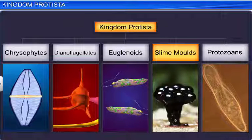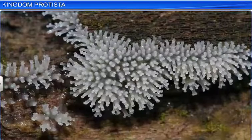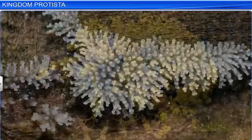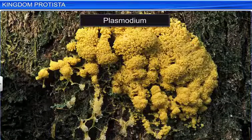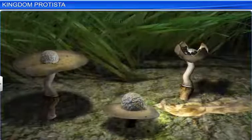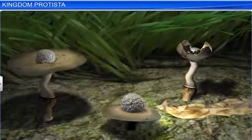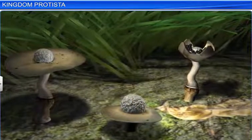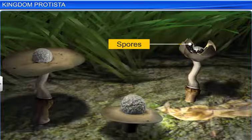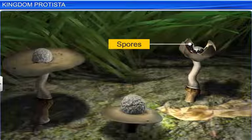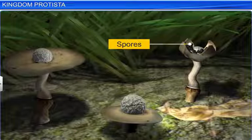Slime molds are saprophytic protists — that is, they live on dead organic matter. They form a huge aggregation called plasmodium. However, during unfavorable conditions, this plasmodium differentiates and forms spores that possess true walls. These spores are so resistant that they can survive for years under adverse conditions.